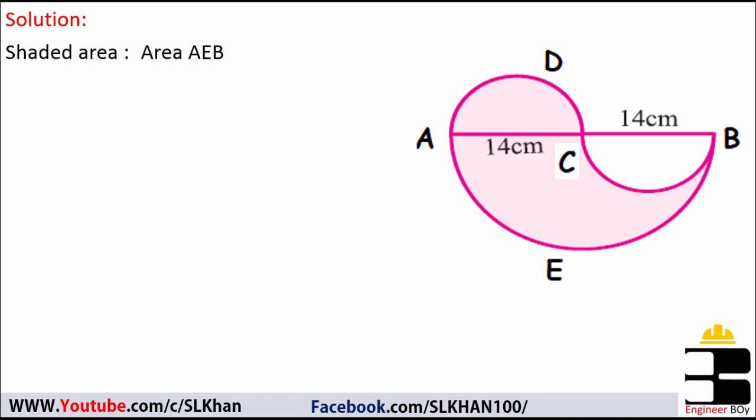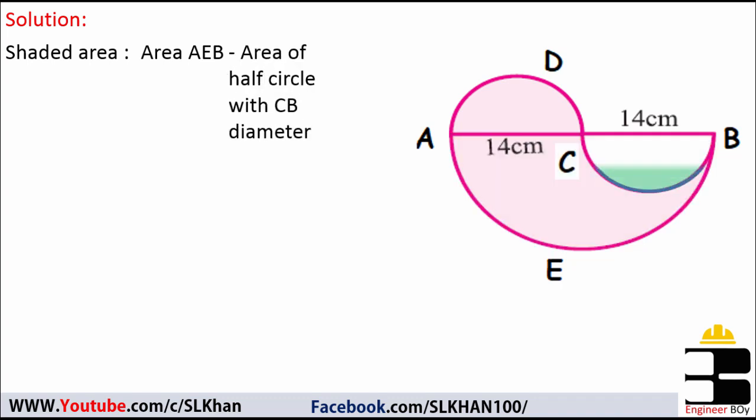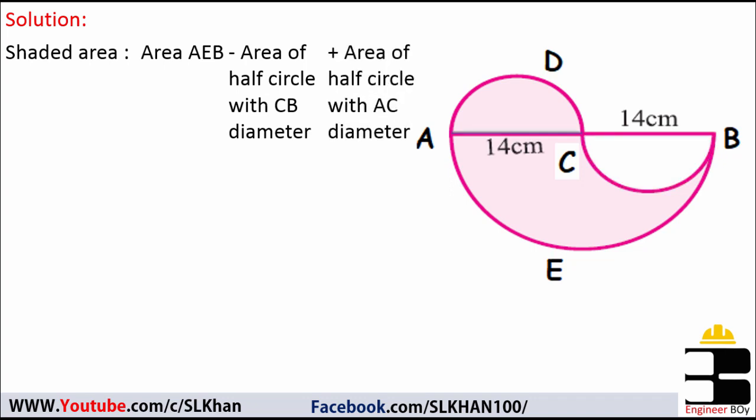...must be area AEB, which is a half circle. This equals area AEB minus the area of the half circle having CB as the diameter, plus the area of the half circle having AC as the diameter. As you can see, both of these smaller semicircles have the same diameter, which is 14.